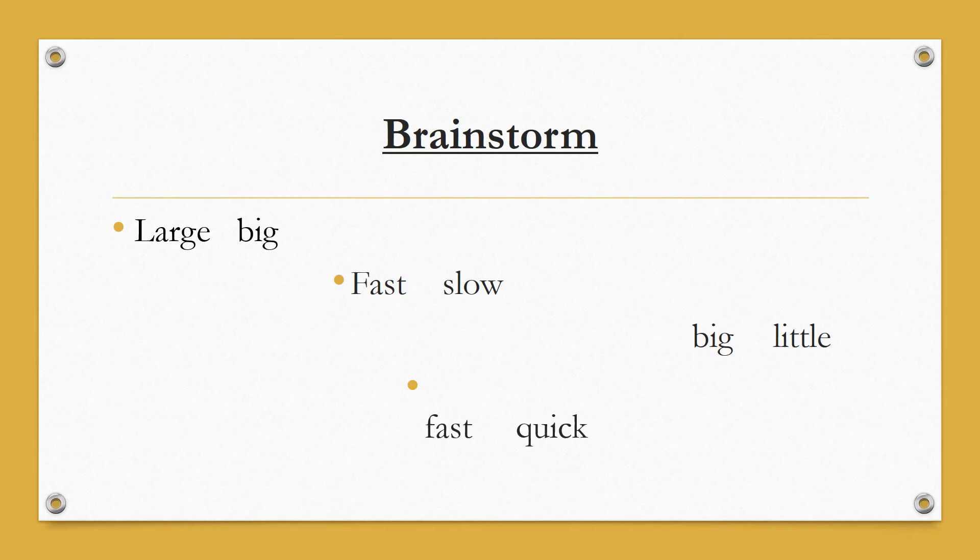I hope you understand the lesson. So what did we learn today? We learned about synonyms and antonyms. We learned that synonyms are words that mean the same or almost the same in meaning, while antonyms are opposite.